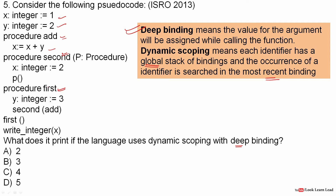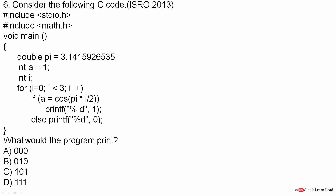When first is called, y is initialized to 3. Then second is called with the procedure add passed as the argument. When this executes, x is initialized to 2, and we add 3 and 2. So the answer is 5.